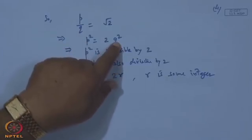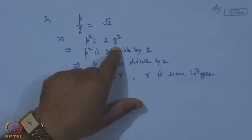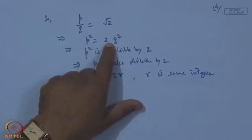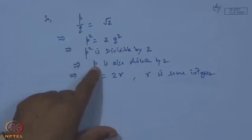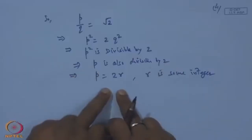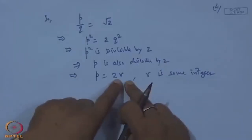Since p² = 2q² and p = 2r, substituting gives (2r)² = 2q², so 4r² = 2q², giving q² = 2r². If p² is even, p itself must be even — because for example if p = 3, p² = 9, which is not even. So if p² is even, p must be even. Now substituting back, we get q² = 2r², which means q² is divisible by 2.